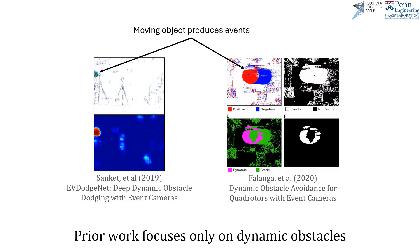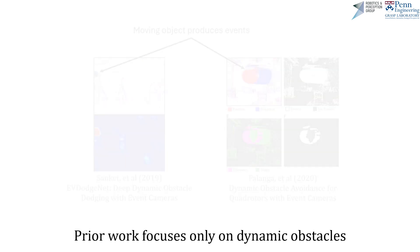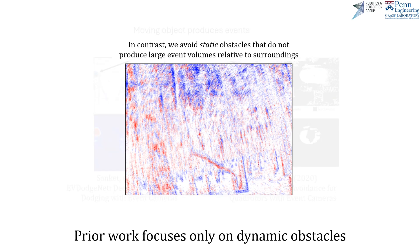Prior works demonstrate event-based obstacle dodging by eliminating ego-motion-produced events and segmenting out dynamic objects. In contrast, static obstacles do not produce events independently of surroundings.